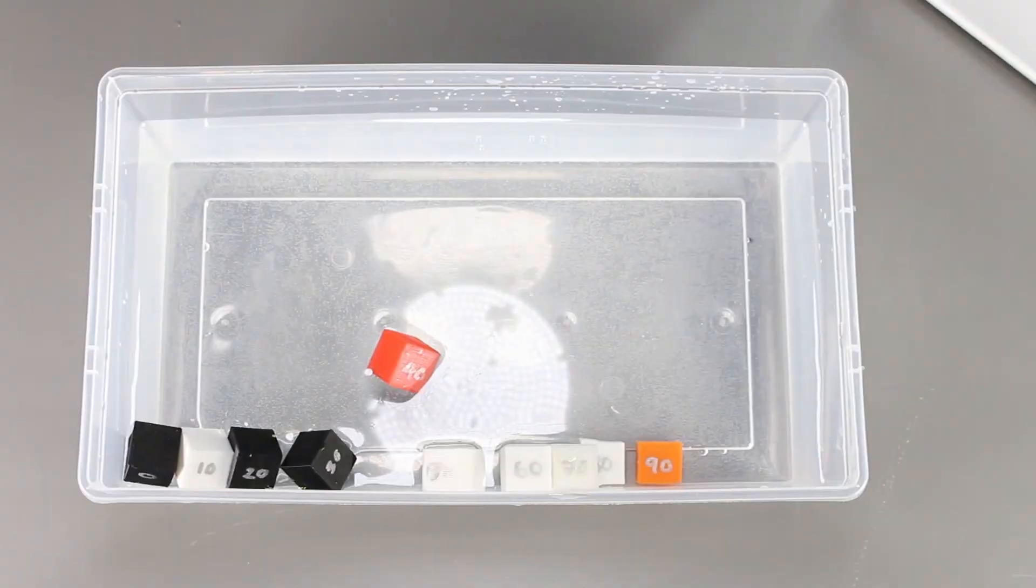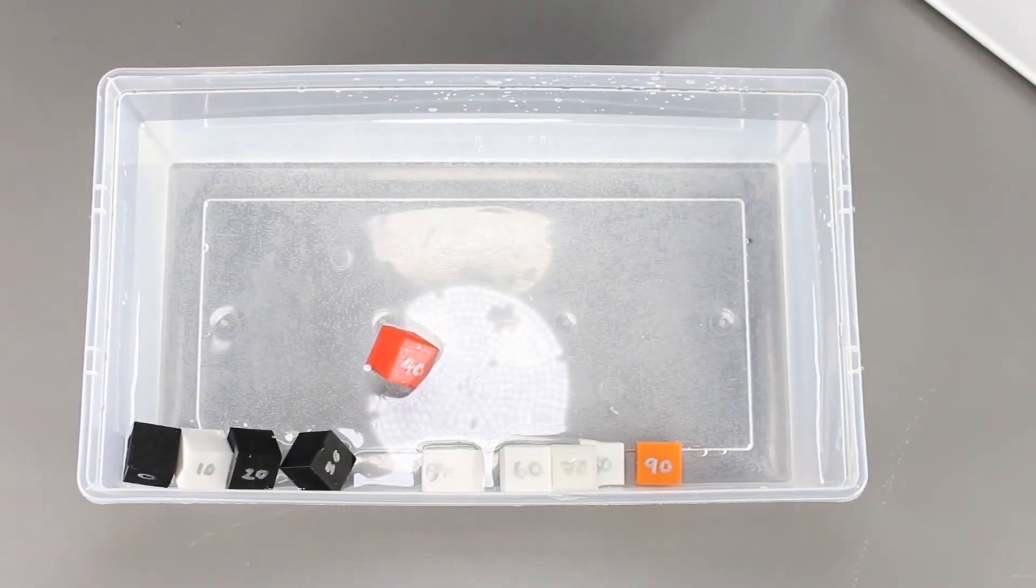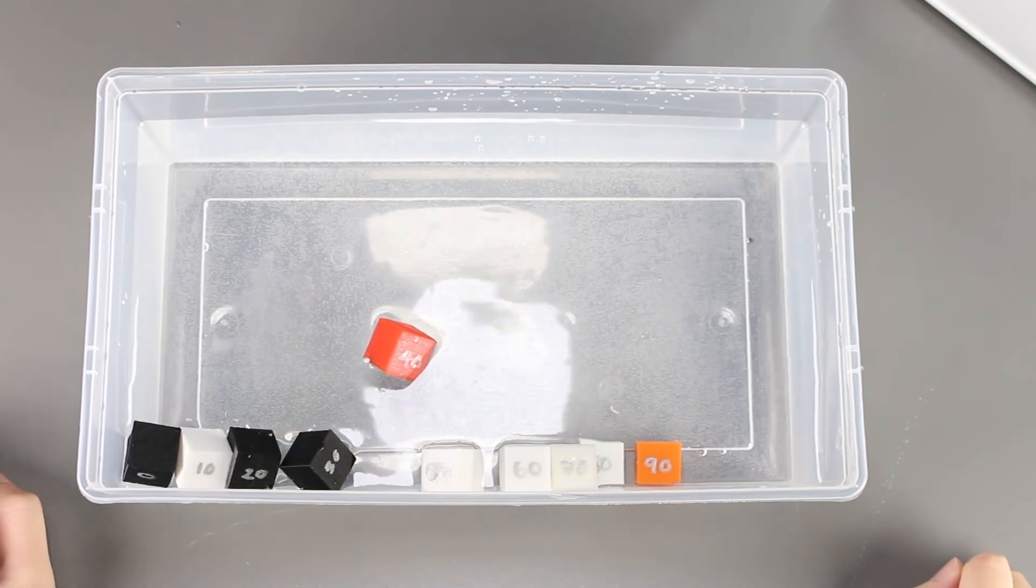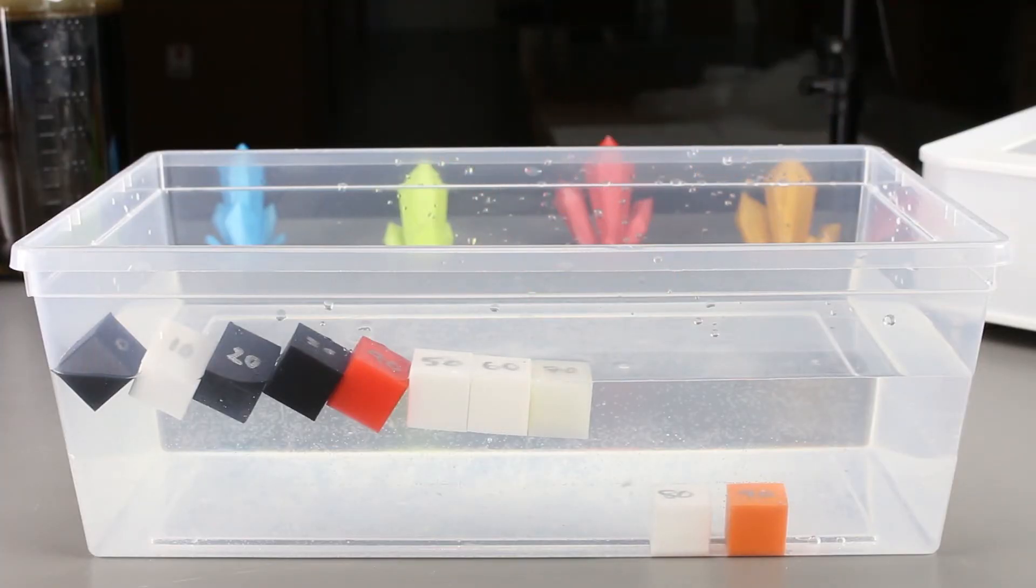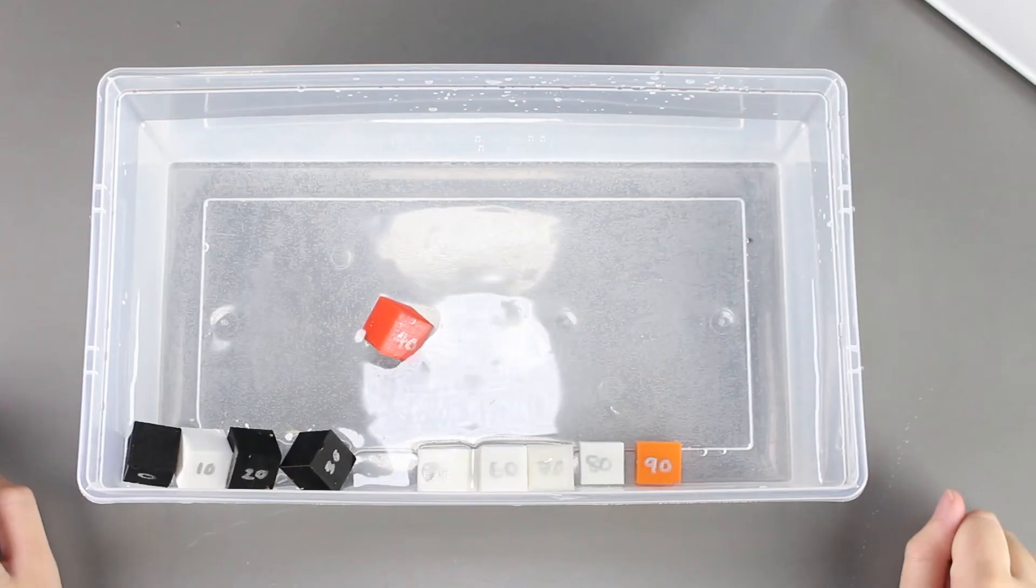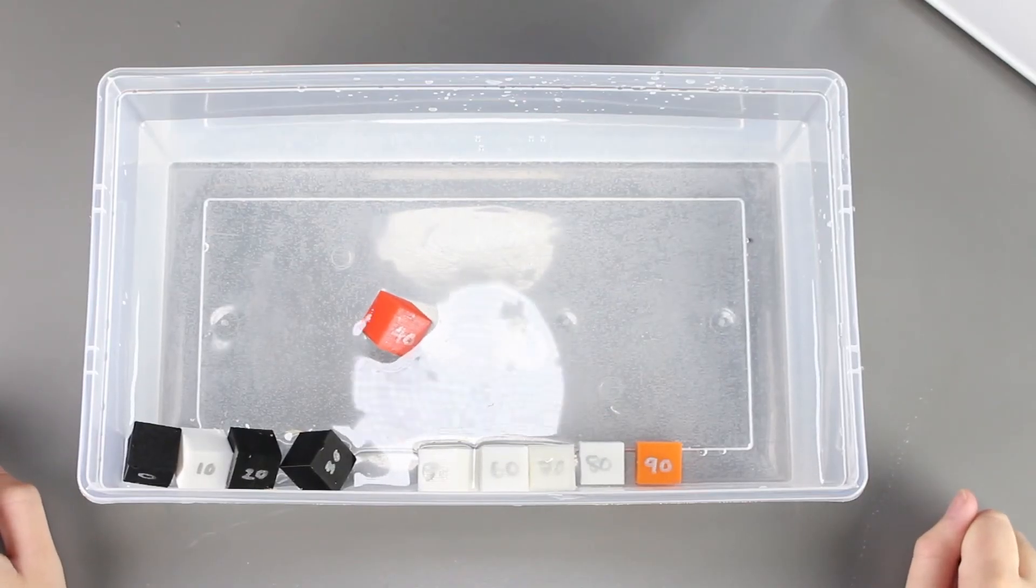So from this test, we can confidently say that 0 to 70% infill will continue to float. So between 70% to 80% is where PLA becomes positive or negative buoyancy. This is a good measure to take into consideration if you are modeling something that needs to float in water.